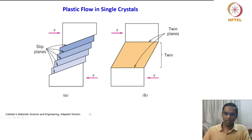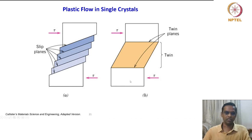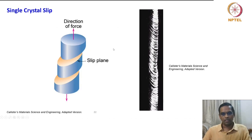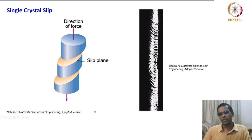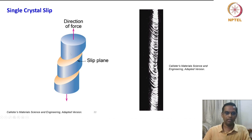What you see here is an untwinned plane, twin planes, and in between the twin region, with shear stress directions shown. This is a single crystal metallic sample from a real-time experiment in the textbook, showing how the slip region exactly matches what we have shown in the schematic.